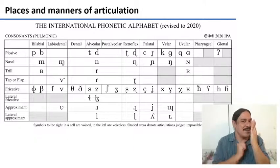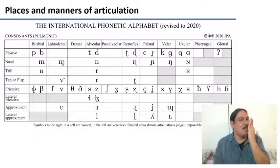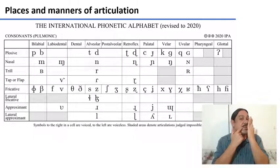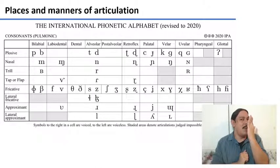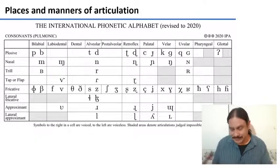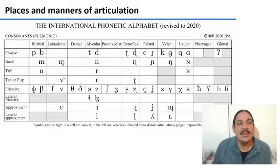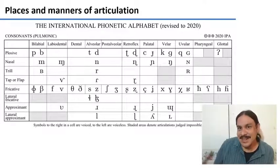Some of the air is coming out through your nose. If you say something like 'bob', all of the air is coming through your mouth — none of it is coming through your nose. Bob. No. Those are nasal sounds.